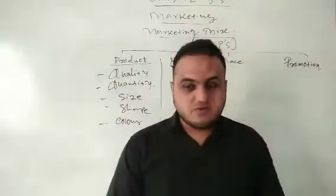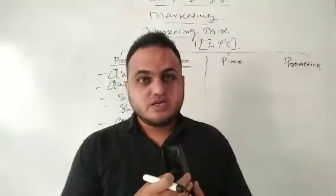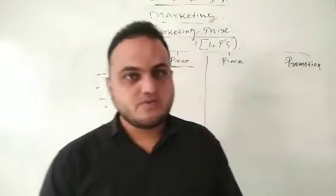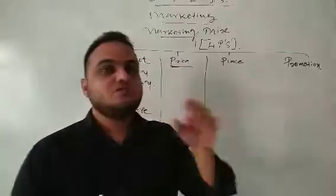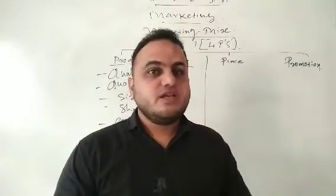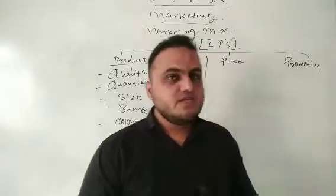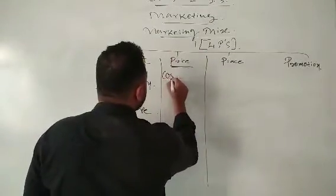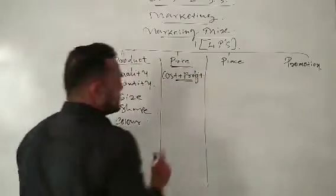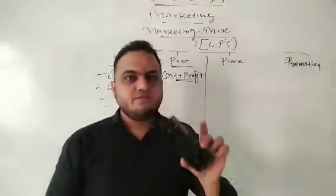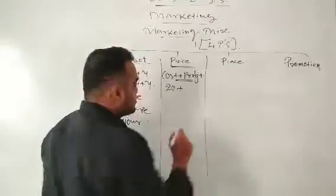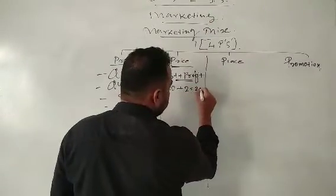How is the price of a product decided? For example, take a duster — its price in the market may be around 30 to 40 rupees. It is not that the manufacturer just liked that amount. The first method is cost plus profit: suppose I make this duster for 20 rupees and I want 10 percent profit — that is 2 rupees — so the price will be 22 rupees.